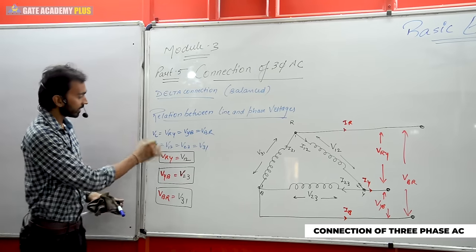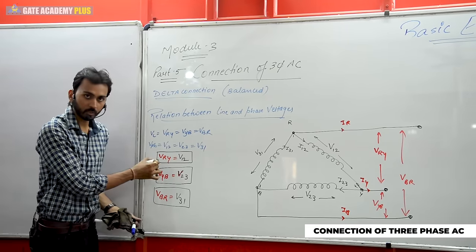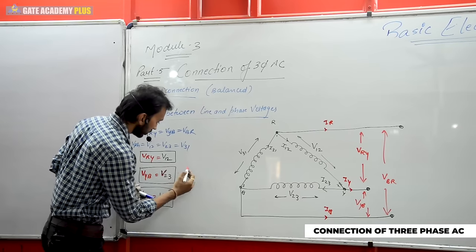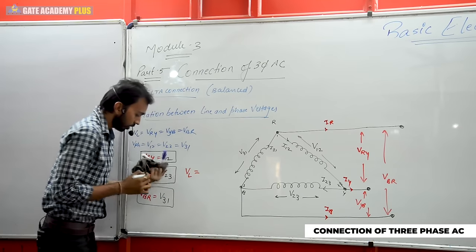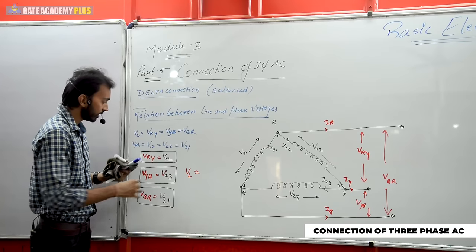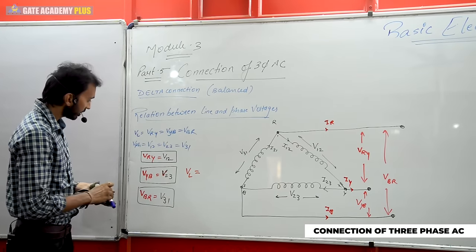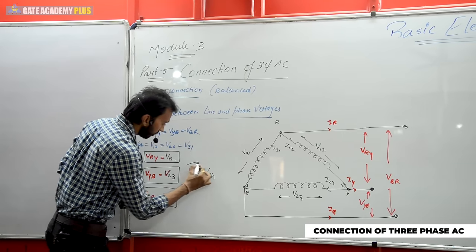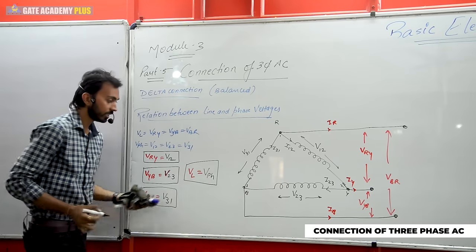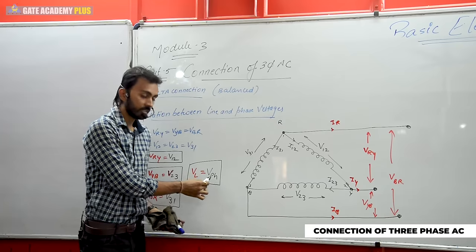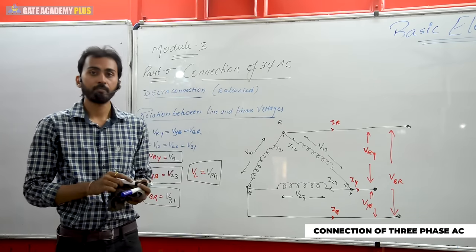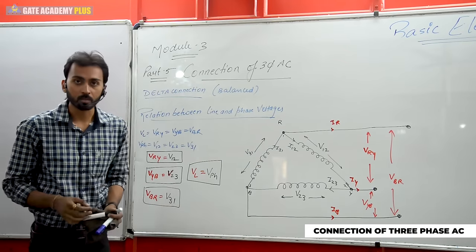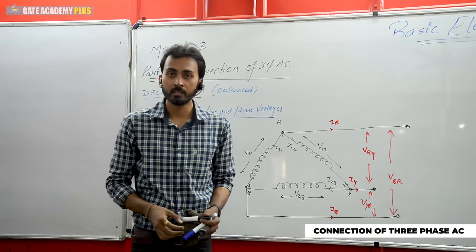Since it is a symmetrical and balanced system, VYB equals V23, and VBR equals V31. Since all line voltages are equal to each other collectively as VL, and all phase voltages V12, V23, V31 are equal collectively as VPH — the final relation for delta case is: line voltage equals phase voltage for a three-phase balanced delta connected system. VL = VPH.